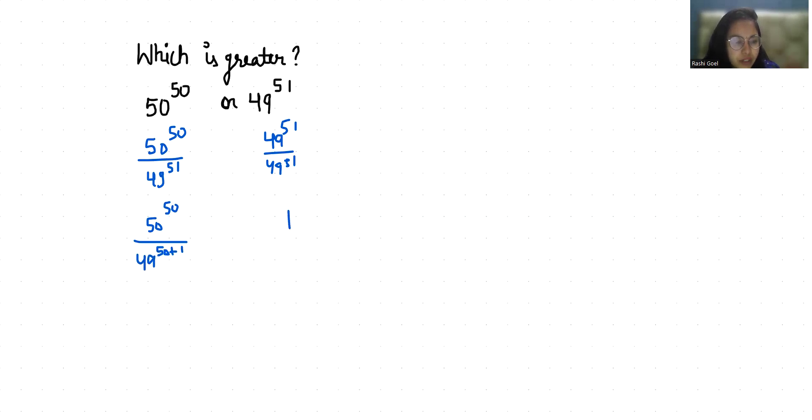So 50 power 50. According to exponent rule x power m plus n, we can write it as x power m times x power n. So 50 power 50 by 49 power 50 times 1 by 49, and here is 1.